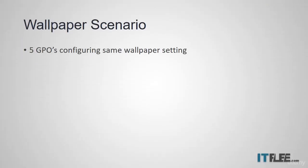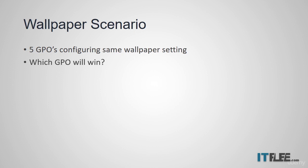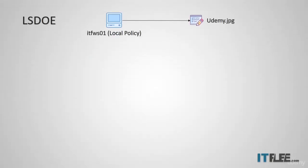Let's take a wallpaper scenario. Say we have five GPOs all configuring the same wallpaper setting, each with a different desktop background. Which GPO is going to win? In order to know this, we're going to have to remember LSDOE — local, site, domain, OU, and enforced.